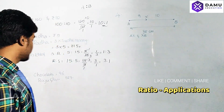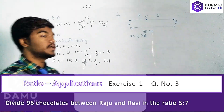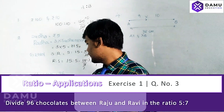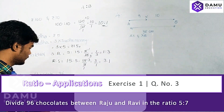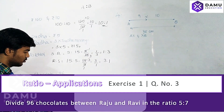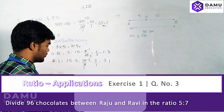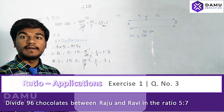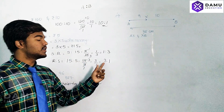Next, someone has 96 chocolates which need to be divided between Raju and Ravi in the ratio of five is to seven. In ratio problems, if we multiply both parts by a constant X, we get the actual amounts. So let chocolates for Raju equal 5X — 5X chocolates, which is the ratio after canceling.